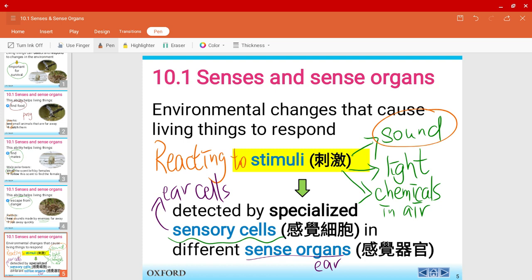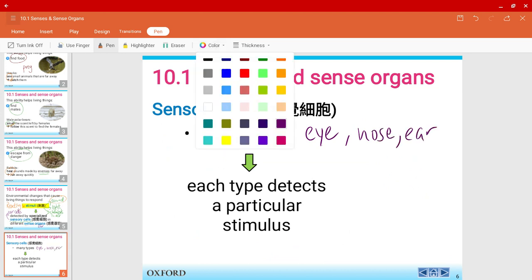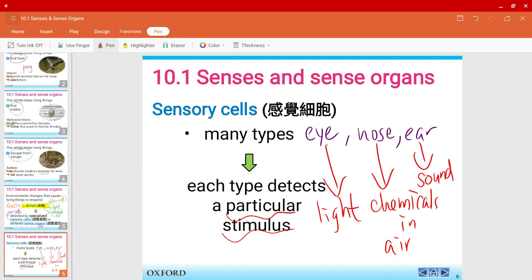For light, we use our eyes to see. So that is a sense organ and we have specialized cells in the eye to help us detect it. So sensory cells, there are many types. As I've told you, it could be the sensory cells in the eye, in the nose, in the ear. Each of them will detect a particular stimulus. For example, in the eye it will detect light. The nose will detect the chemicals in the air for smell. And the ear will detect any sound. So these are all different types of stimulus.